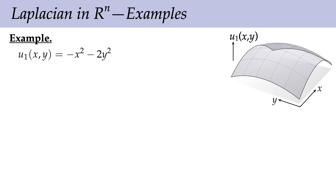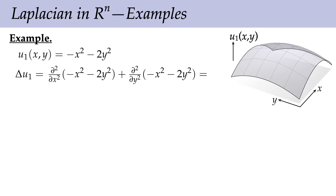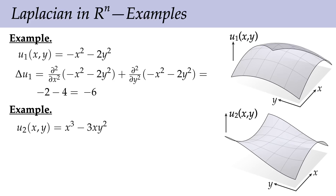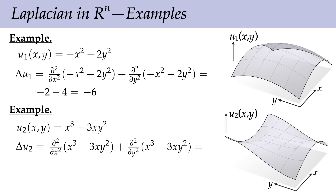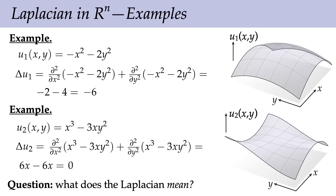Using this definition, we can calculate the Laplacian for some example functions. If u1(x,y) = -x² - 2y², then the Laplacian is the second derivative along x plus the second derivative along y, which gives -2 - 4 = -6. For a different function, u2(x,y) = x³ - 3xy², the Laplacian gives 6x - 6x = 0. It's pretty interesting that over the entire plane the Laplacian of this function is zero—which tells us something special about that function.